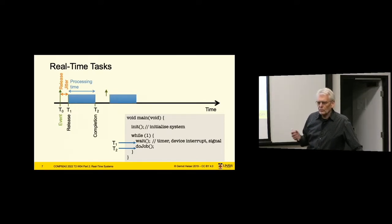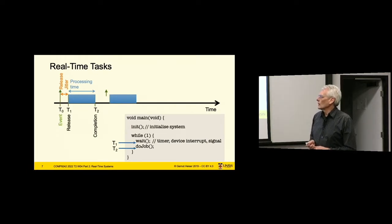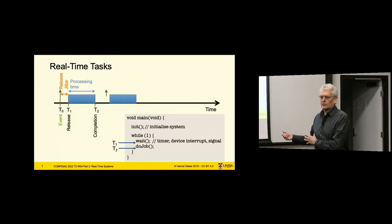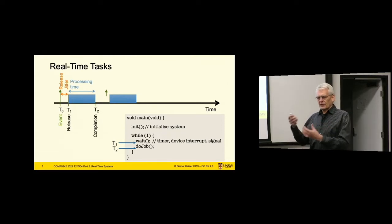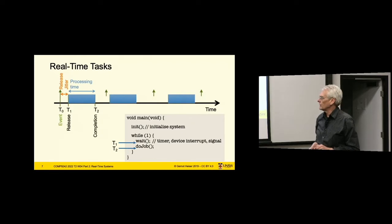In most cases, real-time systems are assumed to be periodic, or at least something near periodic. In general, we assume it's the same event occurring over and over and each time we have to react to it. That is encapsulated in this concept of a task. A task is the thing that deals with one particular type of event, and the job is the processing each time it gets triggered by each of these events.